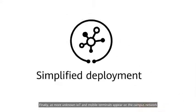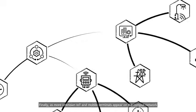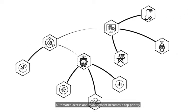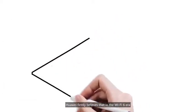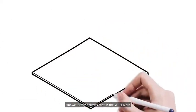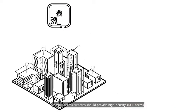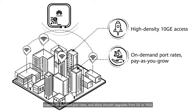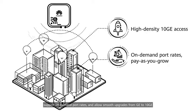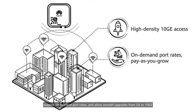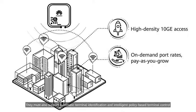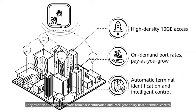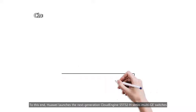Finally, as more unknown IoT and mobile terminals appear on the campus network, automated access and management becomes a top priority. Huawei firmly believes that in the Wi-Fi 6 era, campus access switches should provide high-density 10GE access, support on-demand port rates, and allow smooth upgrades from GE to 10GE. They must also support automatic terminal identification and intelligent policy-based terminal control.